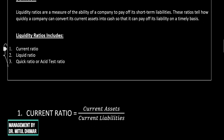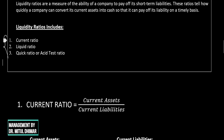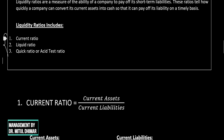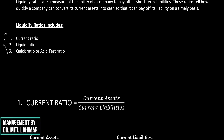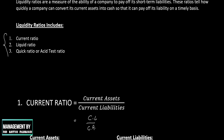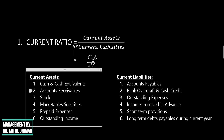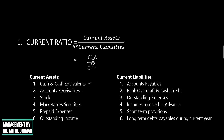Let us start with current ratio first. As the name suggests, it shows the relationship between two current items of a balance sheet: current assets and current liabilities. The formula is very simple — current assets divided by current liabilities. Just to maintain consistency, we always keep current assets on top.